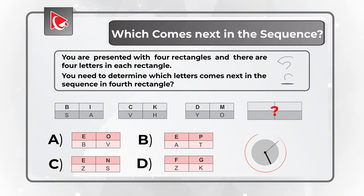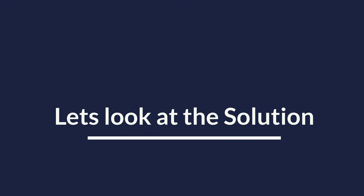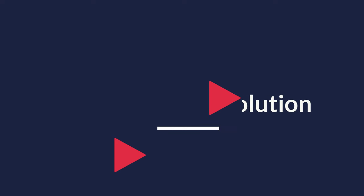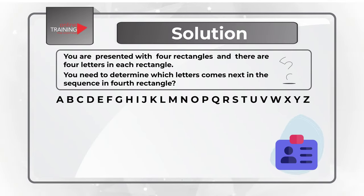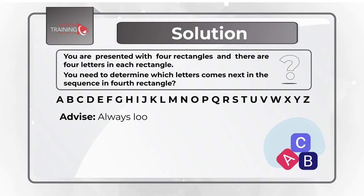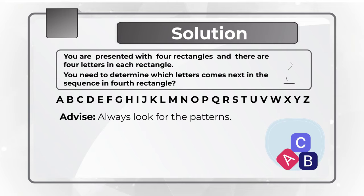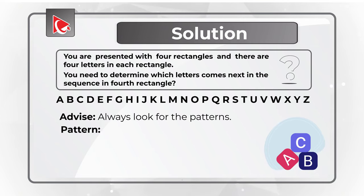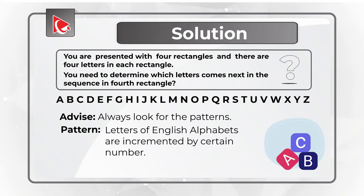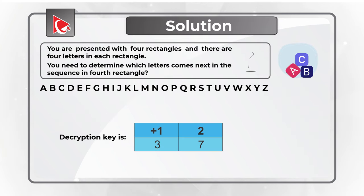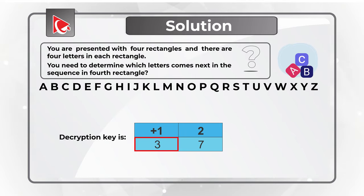Take a close look to see if you can determine the answer. To answer this question correctly, you need to know the letters of the English alphabet as well as a little bit of math. Always look for patterns. The letters of the English alphabet are incremented here by a certain number — the increment is different for each section of the rectangle, and the decryption key is 1, 2, 3, and 7.